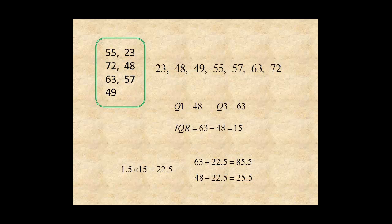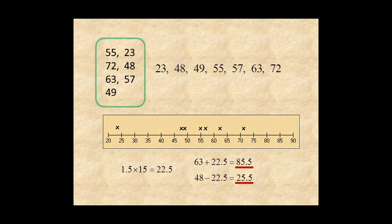These numbers establish new boundaries on the graph. Here's the upper boundary, 85.5, and here's the lower boundary, 25.5. Now, you can clearly see 23 is an outlier.